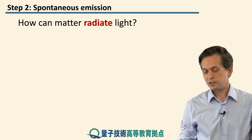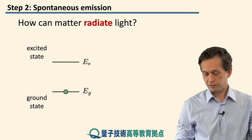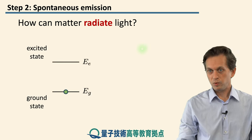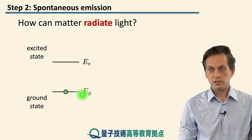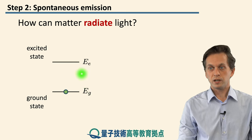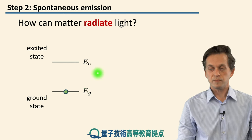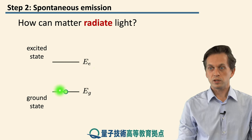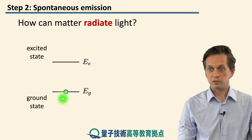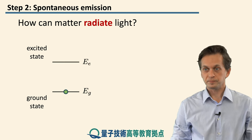Let's consider a model of a simple two-level atom. We've got our ground state with energy EG, and we've got an excited state with energy EE. This green circle denotes in which state the atom is found. So currently it's in the ground state.